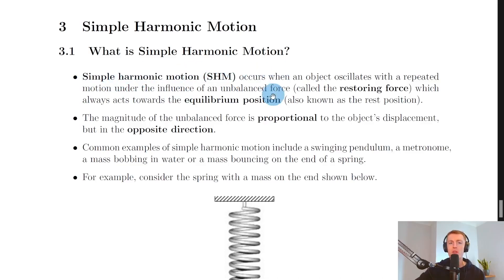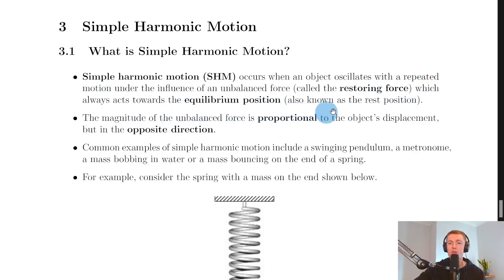So what is simple harmonic motion? Well, we say that it occurs when an object oscillates with a repeated motion under the influence of an unbalanced force called the restoring force, which always acts towards the equilibrium position, also known as the rest position. So it's an object that will want to move back to its equilibrium position when you've moved it away from its rest position to begin with.